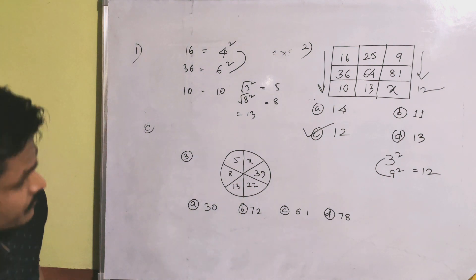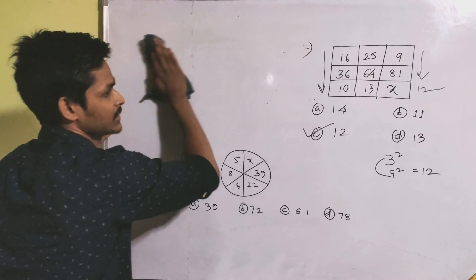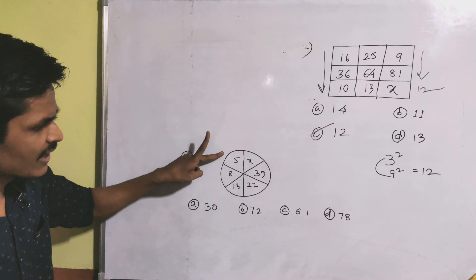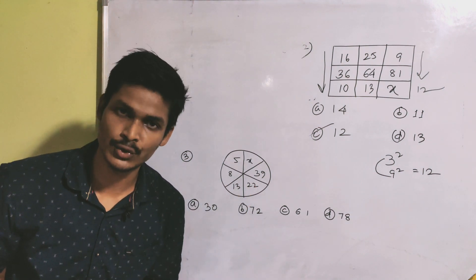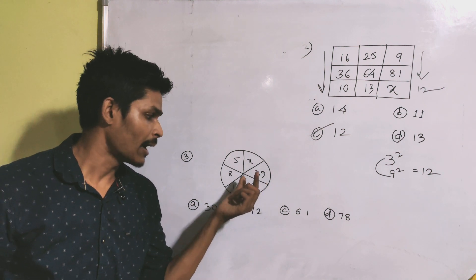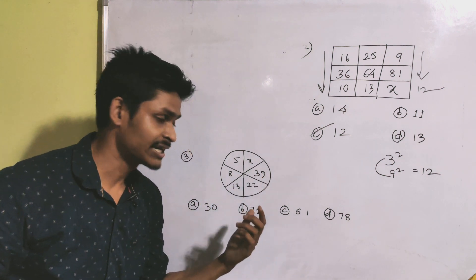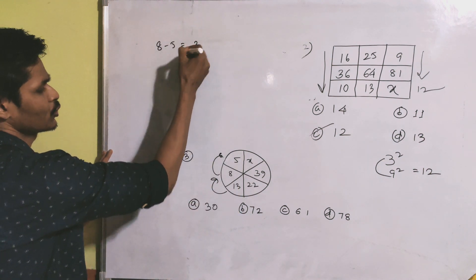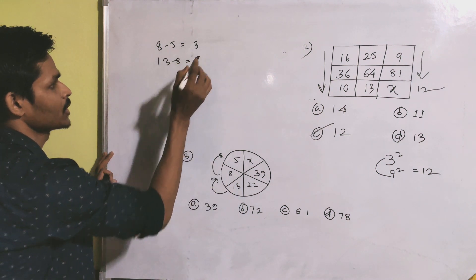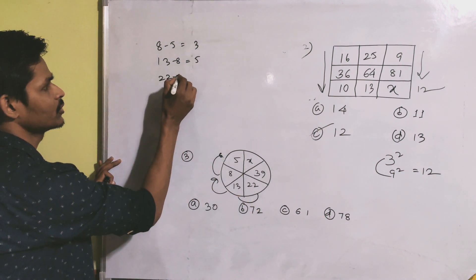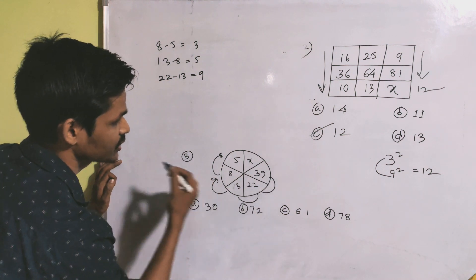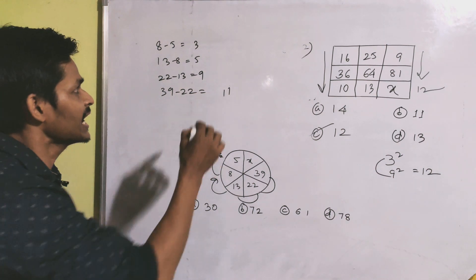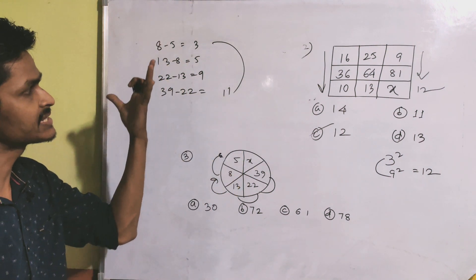For question 3, the series is: 5, 8, 13, 22, 21, 35, 39. Looking at the differences: 5 plus 5 plus 22 minus 13 gives 9, and 39 minus 22 gives 17. The series has differences of 3, 5, 9, 11. How many times? What is the problem with 3, 5, 9, 11?